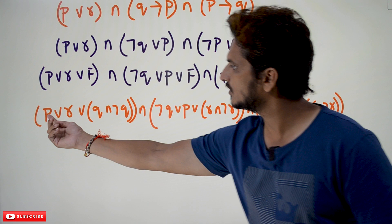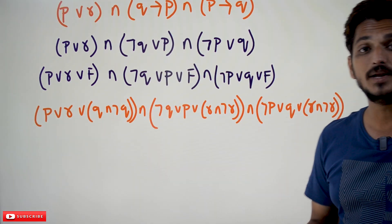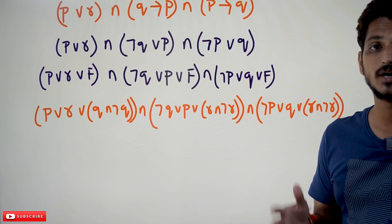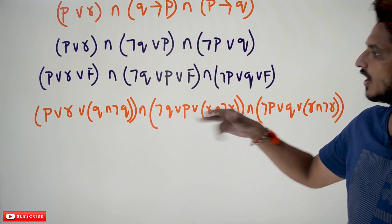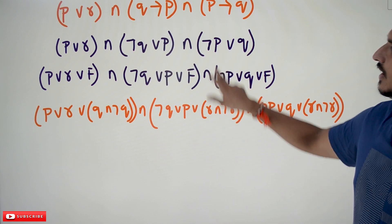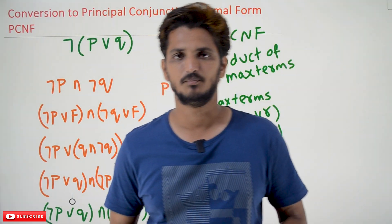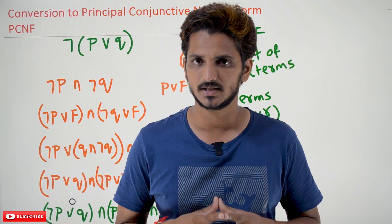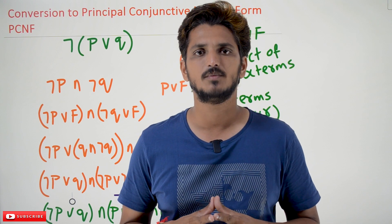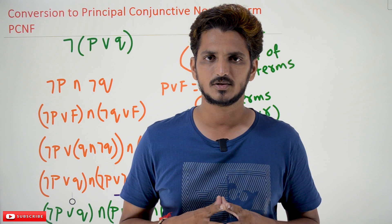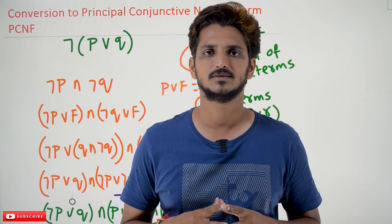Apply the distributive law. From here, keep continuing and eliminate the duplicates — you are going to get the product of max terms. This is how we convert a given proposition into the form of Principal Conjunctive Normal Form, PCNF. Hope you understand this example. If you have any questions, please post them in the comment section below. Thanks for watching. If you haven't subscribed to our channel, please subscribe and press the bell icon for the latest updates. Thank you.